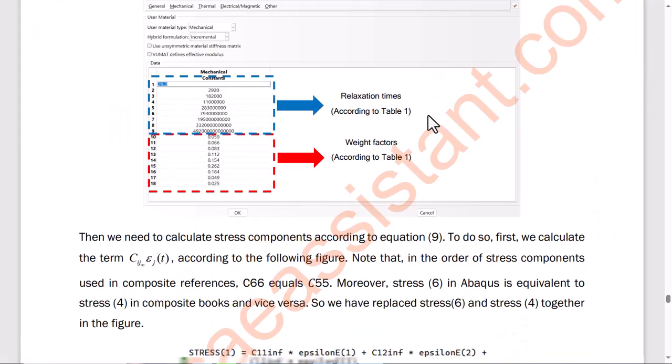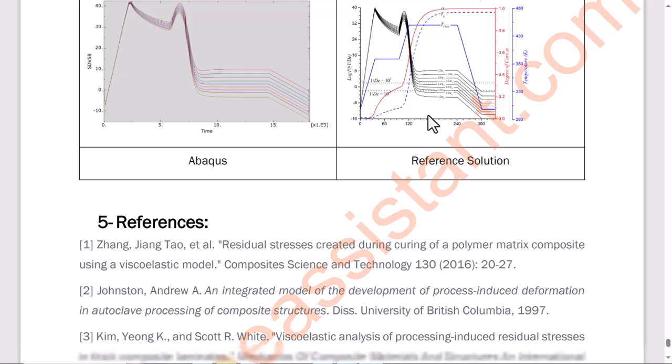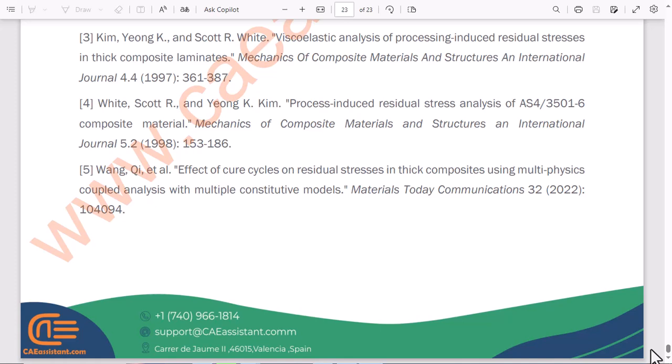Finally, the stress components were calculated using Equation 9. This was an overview of the process of writing the UMAT subroutine. For more details and to access the full Fortran file, refer to the link in the description and check out the complete package.